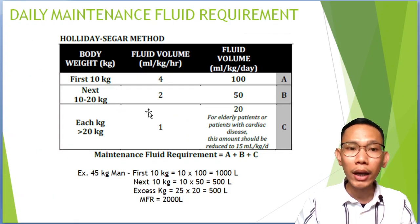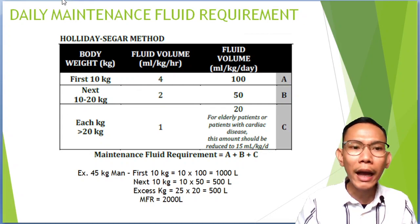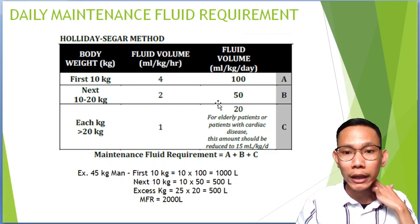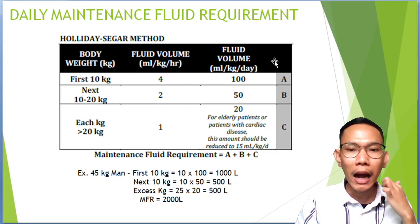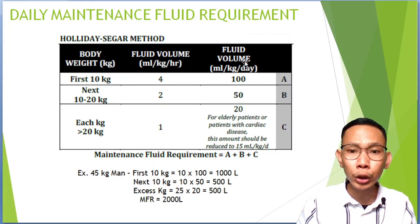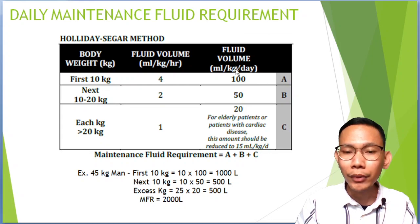We also have what we call the daily maintenance fluid requirement — this is how we compute the daily fluid requirement for each patient. We have a formula that we usually use. For the first 10 kg, the required fluid volume is around 100 ml per kg, or around 4 ml per kg per hour. For the first 10 kg of the patient, for each kilogram of the first 10 kg, we need 100 ml of fluid.